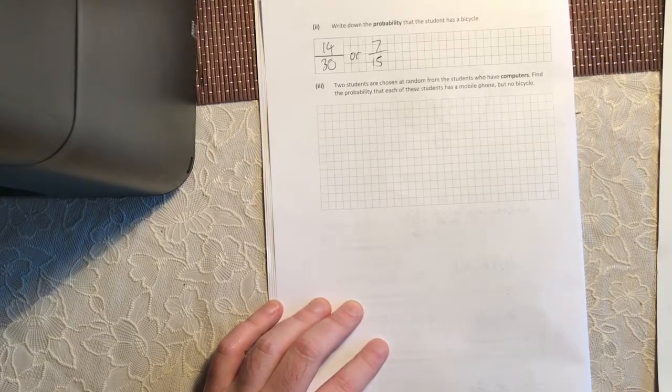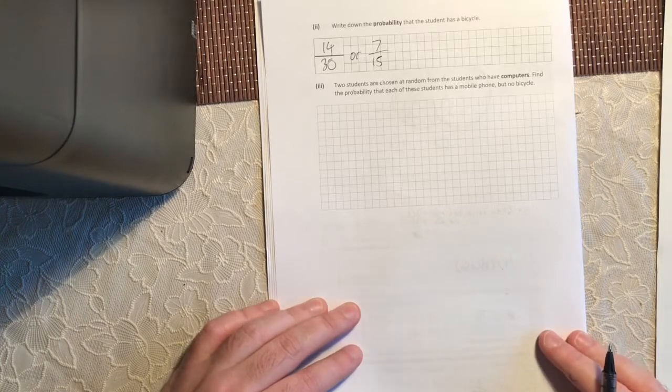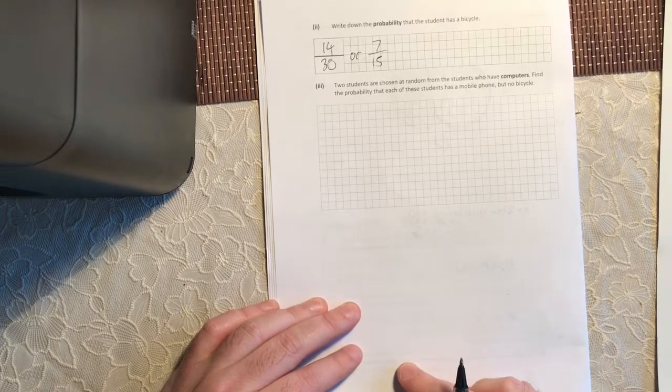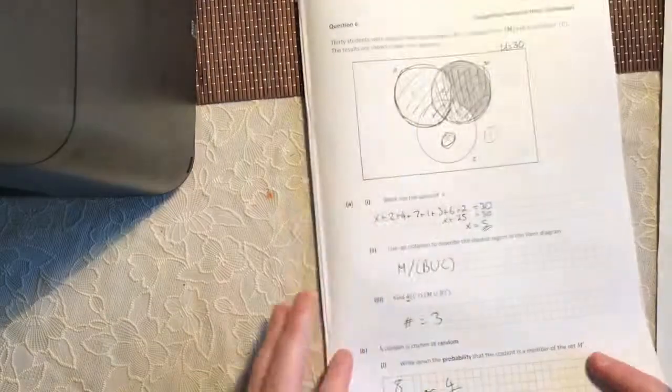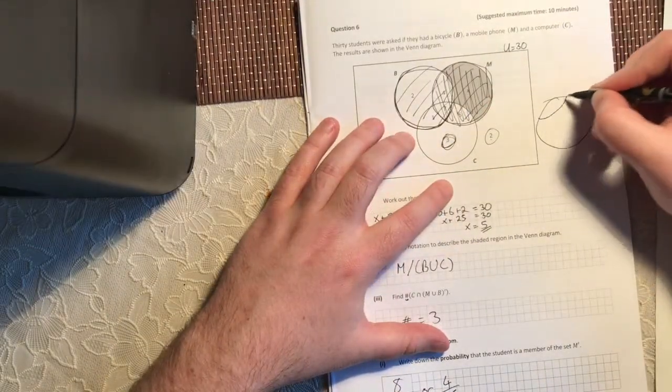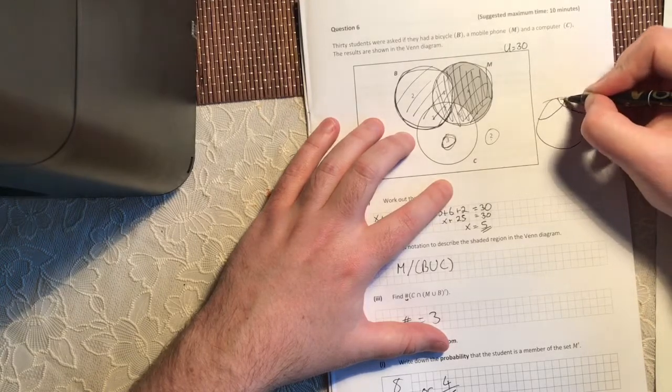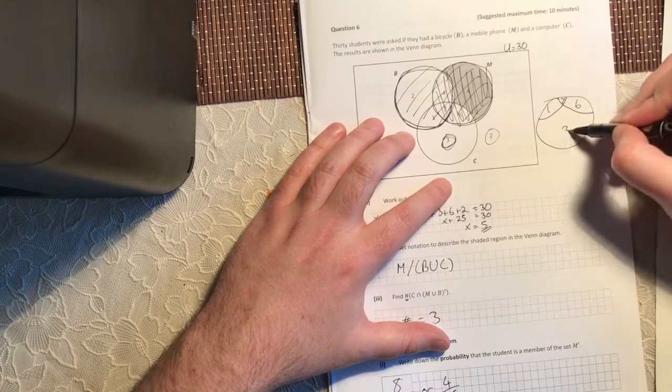Two students are chosen at random from the students who have a computer. Find the probability that each of these students has a mobile phone but no bicycle. Okay, so what are we interested in here? I'm just going to rewrite this circle out here. We've got 7 here, 6 here, 1 here, and 3 here.